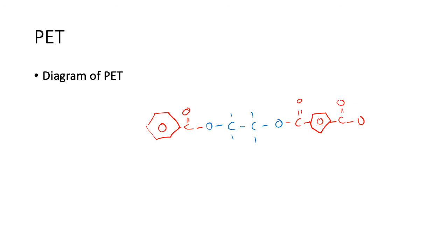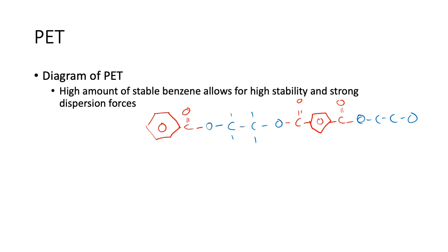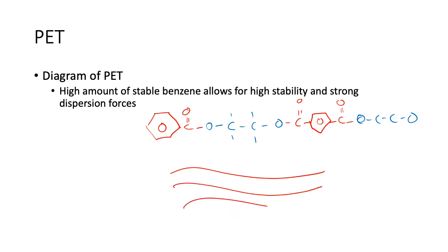The structure continues with a short carbon chain followed by a benzene ring, repeating. The key idea is that the high amount of stable benzene rings allows for high stability and strong dispersion forces. The benzene ring is a stable compound so it won't react easily, but it's also a large group, so instead of just a straight chain you have a benzene ring that can form lots of dispersion forces between the polymer strands of PET.